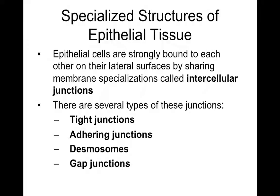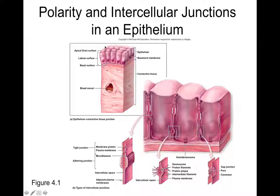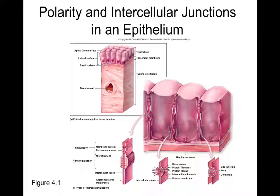Looking at a zoomed-in image of epithelial tissue, you can see cells side by side with structures between them that look like rivets. Tight junctions consist of rows of protein that fuse the plasma membranes of adjacent cells together, making it very difficult for molecules to slip between cells. Tight junctions are involved mostly with waterproofing.